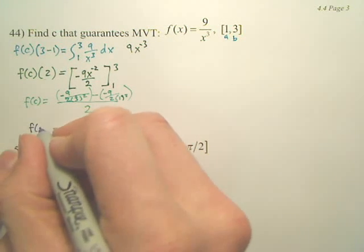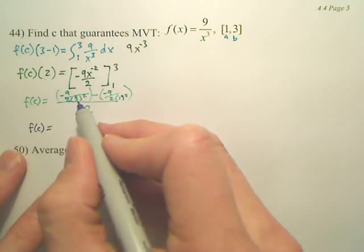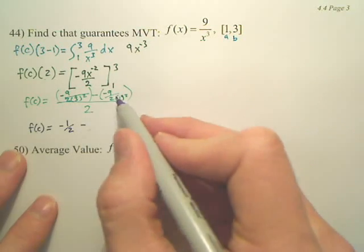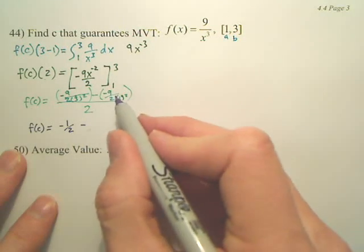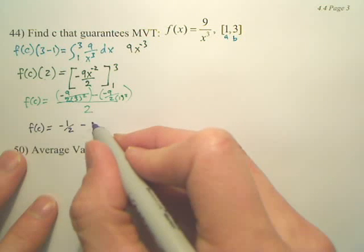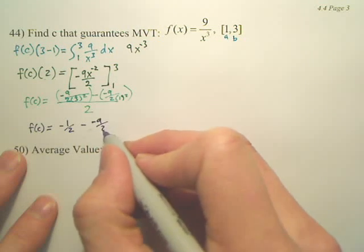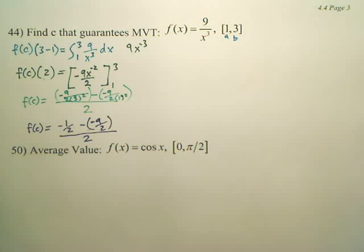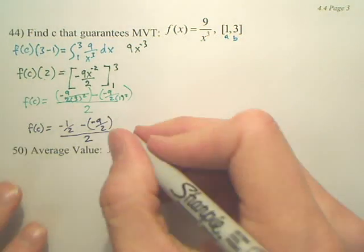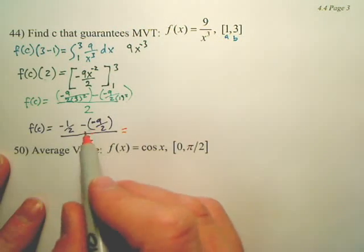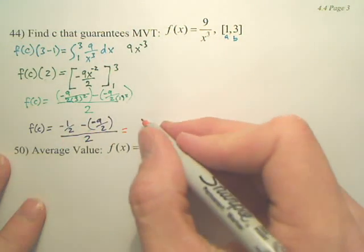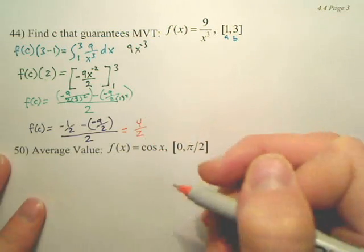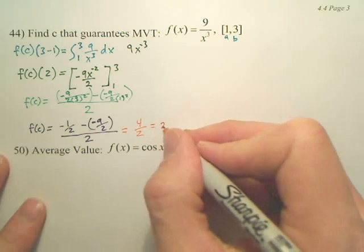So it looks like we got F of C is equal to, doesn't it look like negative 1 half? Minus, what did that become, negative 9 half? All over 2, which that looks like we got a positive 9. So 9 plus 1 half would be 8 half. 8 half is 4. 4 divided by 2 is 2.